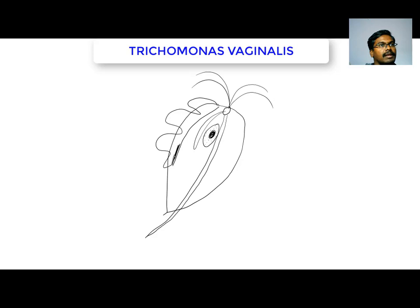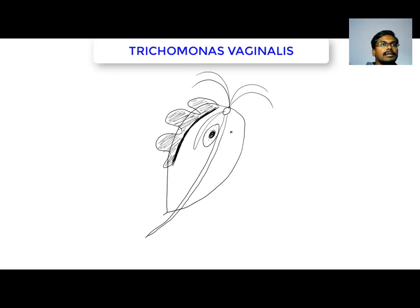The undulating membrane arises from a structure called the costa, so I am labeling this as the costa. I will do some shading for the undulating membrane. You may have seen the diagram looks very complicated in textbooks, but seeing this demo, I think you can draw the parasite diagram easily in your examination.